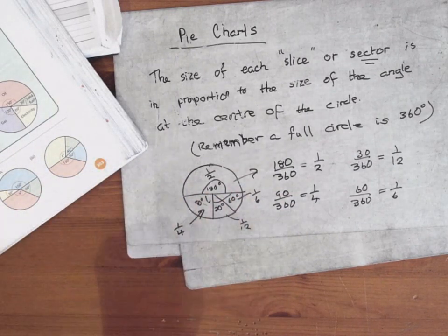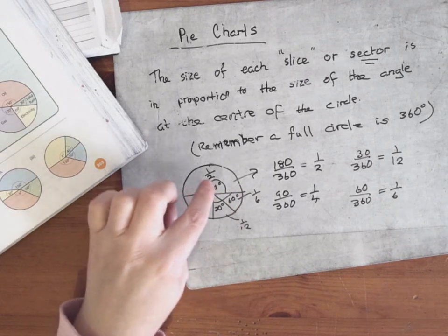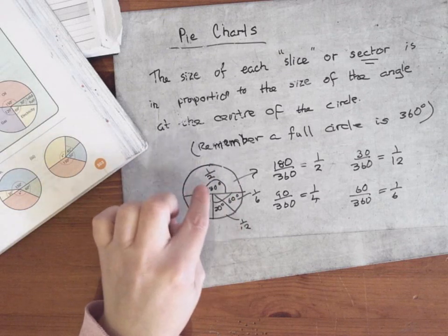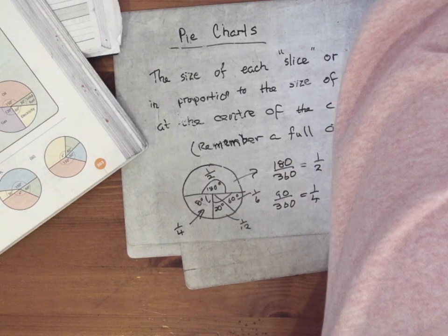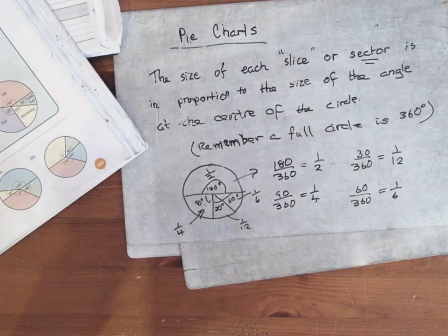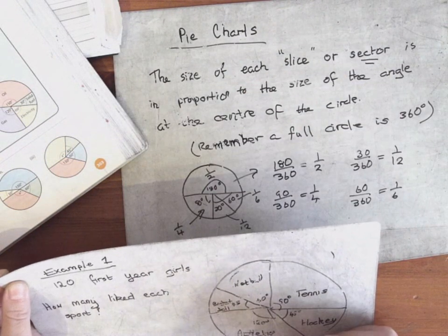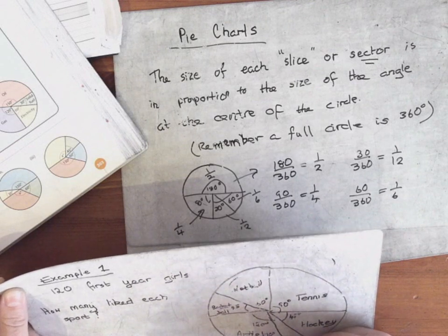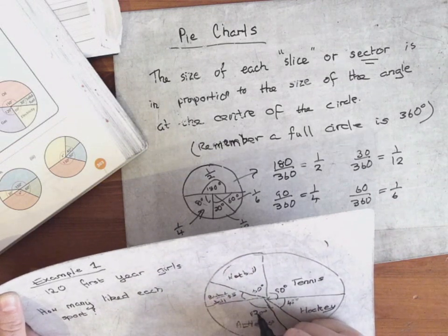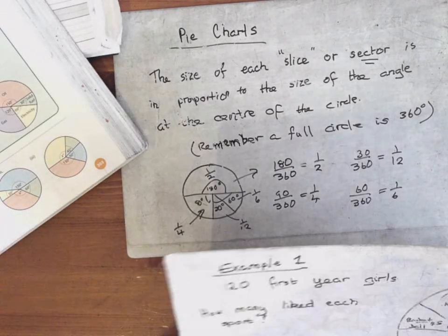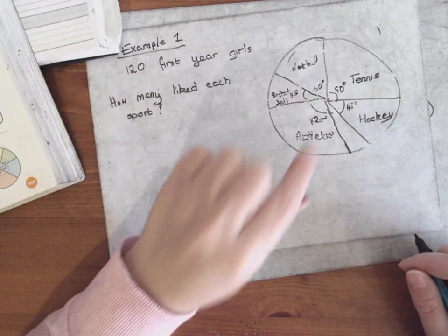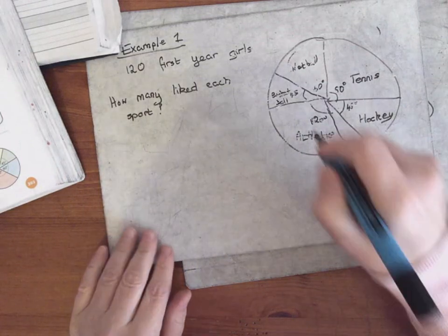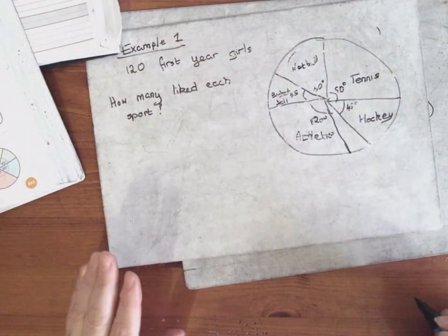So if I ask you what's your favourite colour and half of you said it was pink, that would be represented by 180 degrees. So I'm going to go straight on to an example. Examples: you could be given a pie chart and asked for the numbers — as in how many does this represent — or you could be given the numbers and asked to draw the pie chart. So I'm going to start with: here's a pie chart, tell me the numbers.